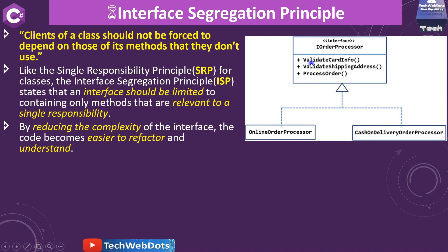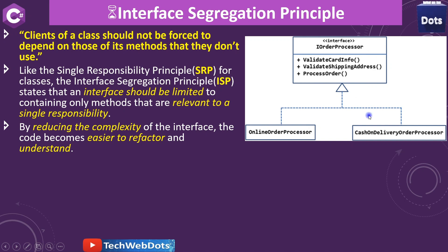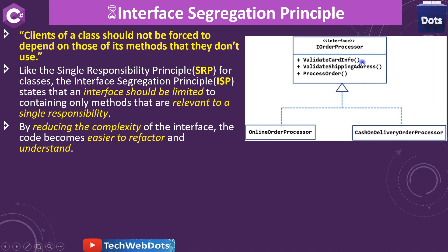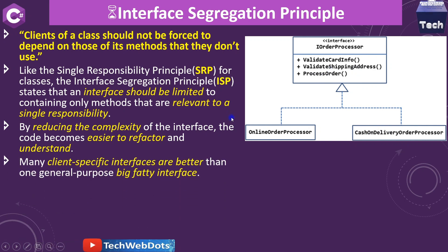This is the IOrderProcessor interface and it contains three methods: ValidateCardInfo, ValidateShippingAddress, and ProcessingOrder. This interface was originally created for an online order processor. But now, if we add one more type — a Cash On Delivery order processor — this interface is not good enough, because in cash on delivery we don't need to verify card information.